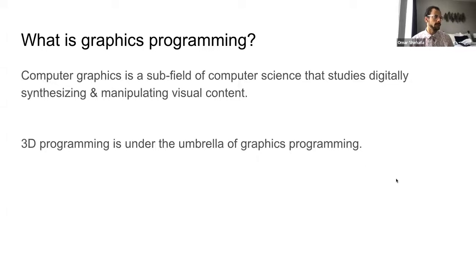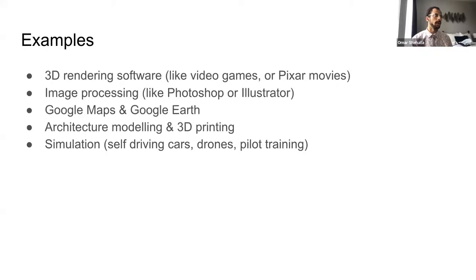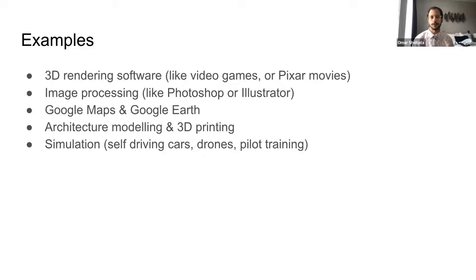Graphics programming is a subfield of computer science that studies putting things on the screen. 3D programming falls under that umbrella. Common examples include video games — software that visualizes 3D models that move, jump, and have animated effects — and animated movies like Pixar or Disney films. Also everyday tools like Photoshop or Illustrator that manipulate photos or create digital art. The people who make that software are graphics programmers.